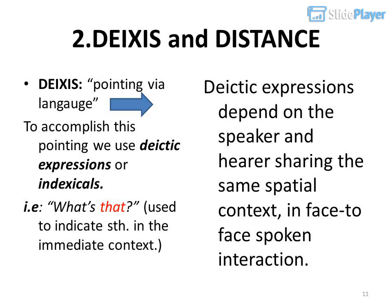Deixis and Distance. Deixis: pointing via language. To accomplish this pointing we use deictic expressions or indexicals — for example, 'What's that?' — used to indicate something in the immediate context. Deictic expressions depend on the speaker and hearer sharing the same spatial context, in face-to-face spoken interaction.